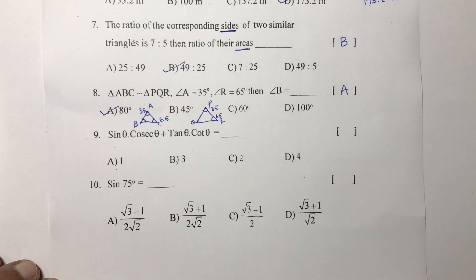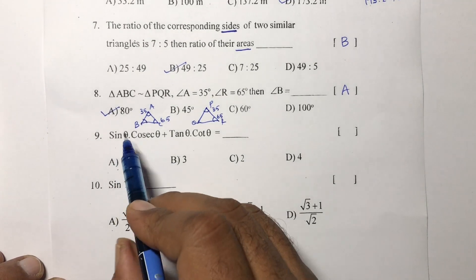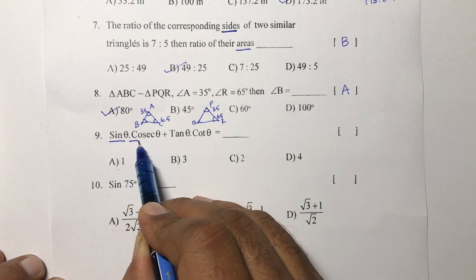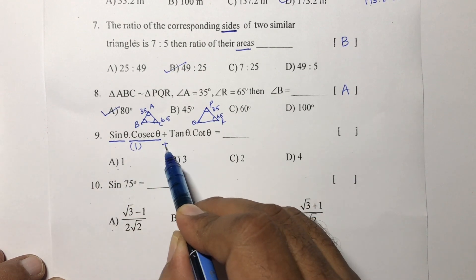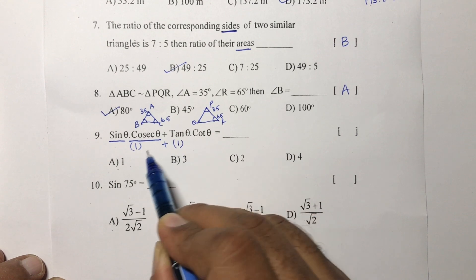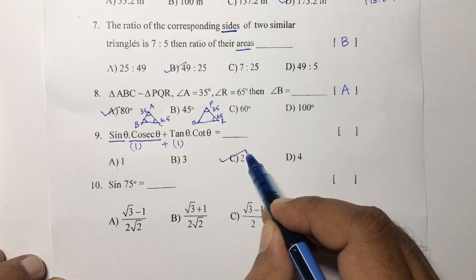Next, sine into cosec. These both are reciprocals. Sine into cosec is reciprocal, so if we multiply we get 1. And tan into cot also reciprocal, so if we multiply we get 1. 1 plus 1 equals 2. Correct option is C.